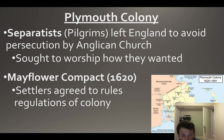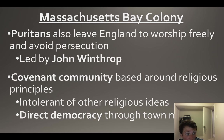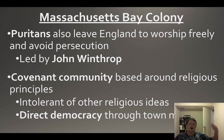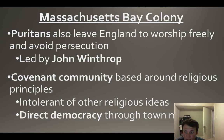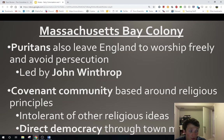After some successes of the Pilgrims, you get the Massachusetts Bay Colony. The Puritans follow the Pilgrims to the New World to avoid persecution from the Reformation in England. They're led by John Winthrop, and their community is known as a covenant community based mostly around religious principles. The 'shining city on a hill' is the sermon he gives. They're fairly intolerant of other religious ideas and hold town meetings with direct democracy.